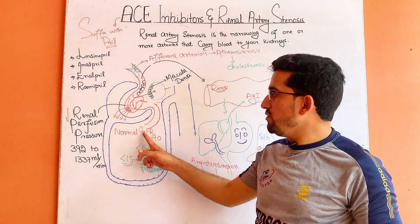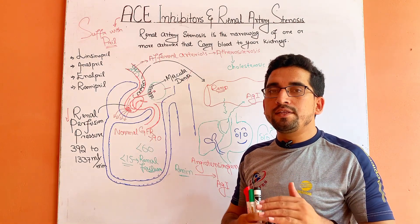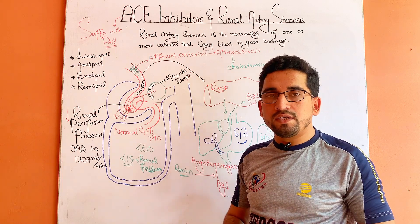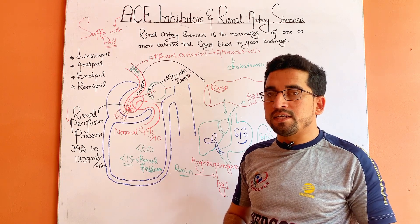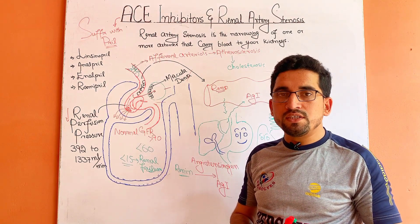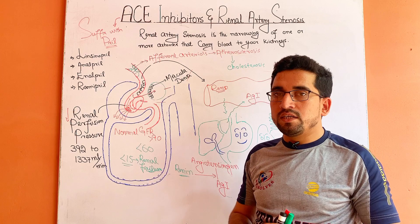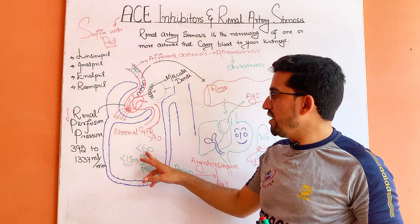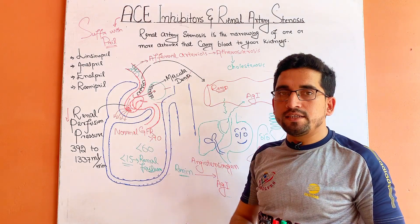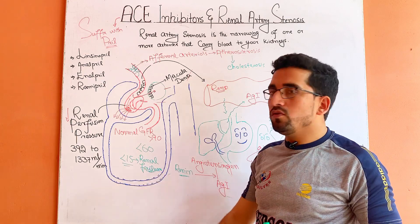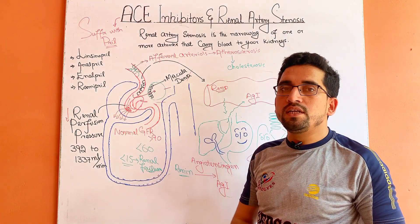The normal GFR value is greater than 90, at which the functions of the kidney will be good and it will perform correctly. But when the GFR is decreased, the conditions of the kidney will be affected. When the GFR value is less than 60, there will be disease in the kidney, and when the GFR value becomes 15 or less than 15, there will be renal failure.